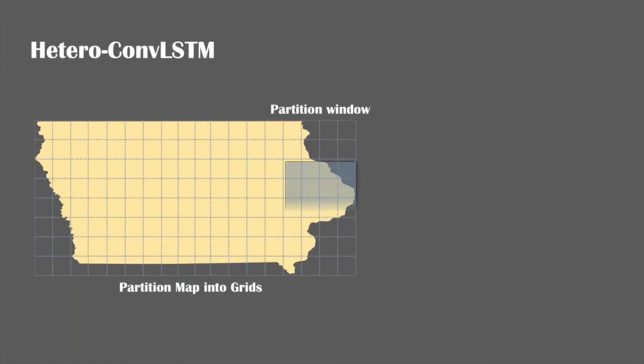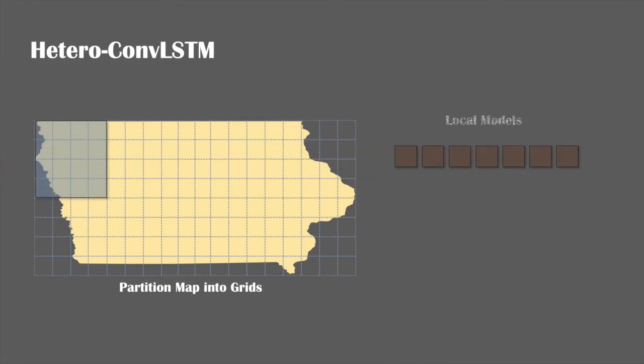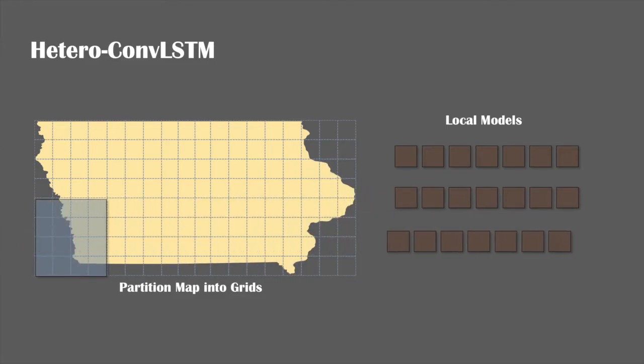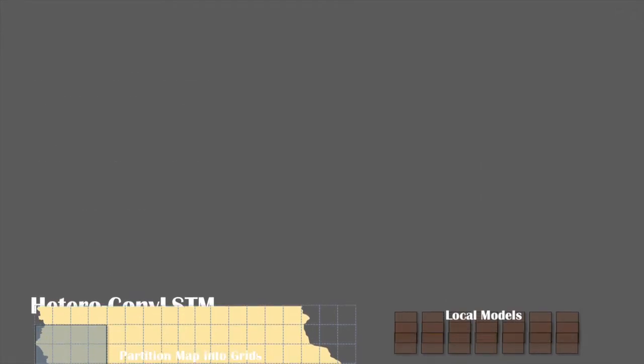To address spatial heterogeneity, we build the model using an ensemble method. We use a moving window approach where the size of moving window is 32 by 32. We take subsets of the spatial network by moving the window from the top left to bottom right corner with a step of 16 grids.